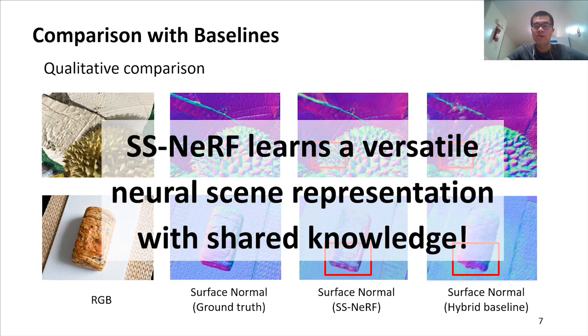We observe that our SSNRF, which jointly predicts RGB images and associated scene properties, can benefit from the shared representation which encodes 3D geometry information.